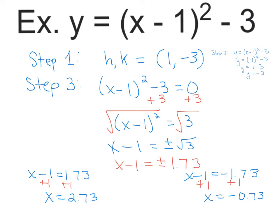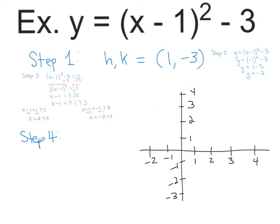Now my last step is to simply graph it. My vertex is (1, negative 3), so I put a point there. My y-intercept is at negative 2, so I put a point there. My two x-intercepts are 2.73 and negative 0.73, so I put two points there. And now I connect those dots in a U-shape. There is the graph of that equation. We're going to follow these steps each time — it just depends what form the equation is in.